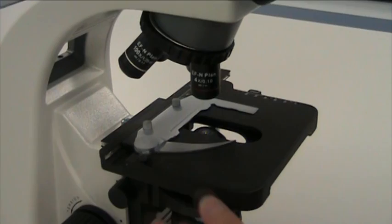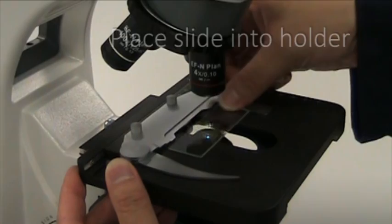Next, gently move the spring-loaded arm and place the slide onto the stage. Make sure the slide is held by the arms of the slide holder and not sitting underneath them.